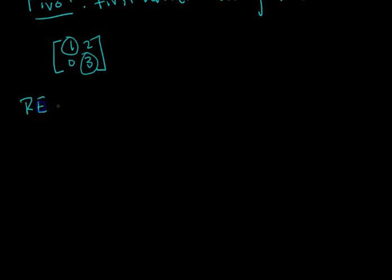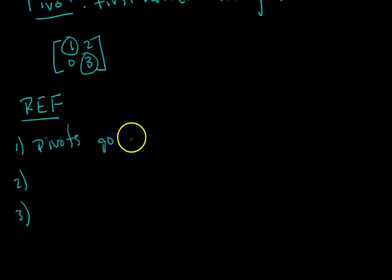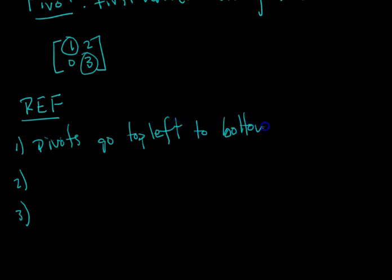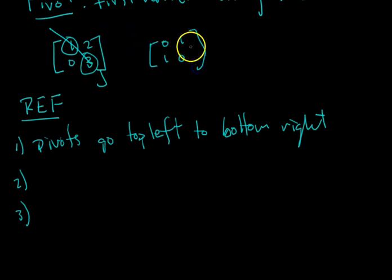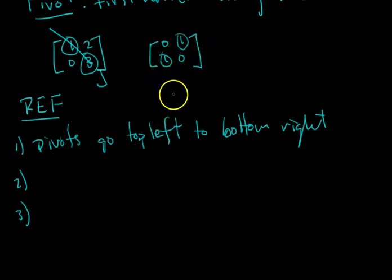If a matrix is to be in row echelon form, it has to meet three conditions. The first condition is that the pivots go top-left of the matrix to bottom-right. In this example matrix, it satisfies that condition because they go top-left to bottom-right. When would they not satisfy this? If you had a matrix where the pivots go top-right to bottom-left, that does not satisfy the first condition.